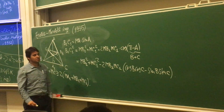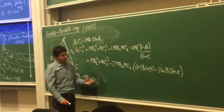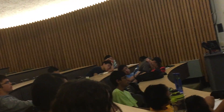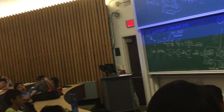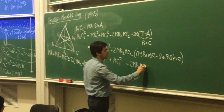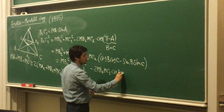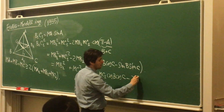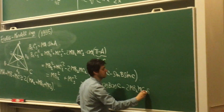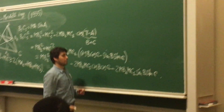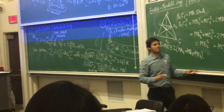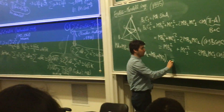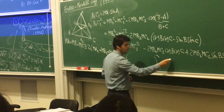Now, what to do? And this looks messy. You have all this. Let me rewrite it: MB1 squared plus — I'm going to leave a space here for you to see why — MC1 squared minus 2·MB1·MC1·cosine B cosine C, minus 2·MB1·MC1·sine B sine C.